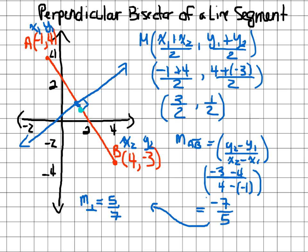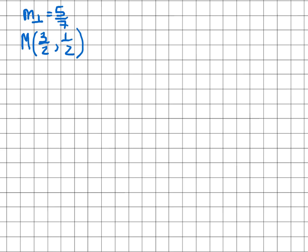We have the perpendicular slope of 5/7 and the midpoint (3/2, 1/2), so we can create the equation of the line. Using y = mx + b, I substitute in the slope: y = 5/7 x + b. The only thing left to find is the y-intercept b.